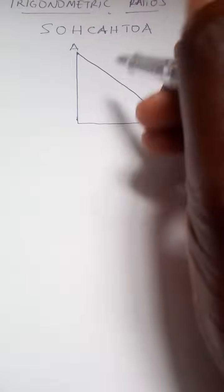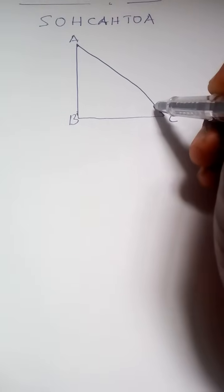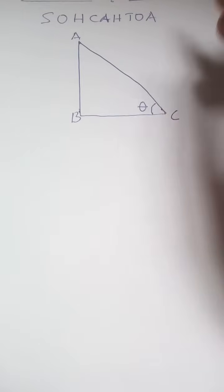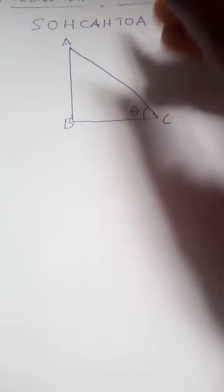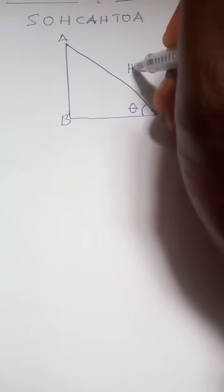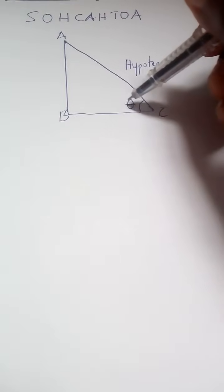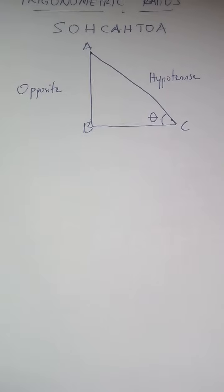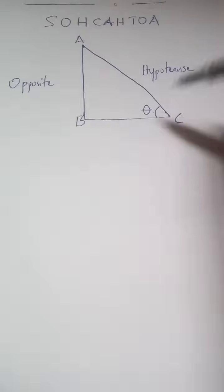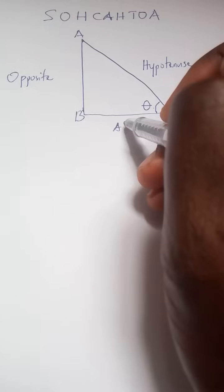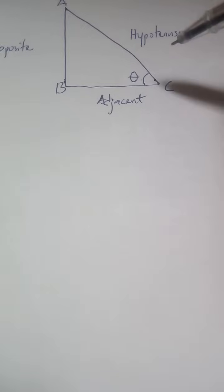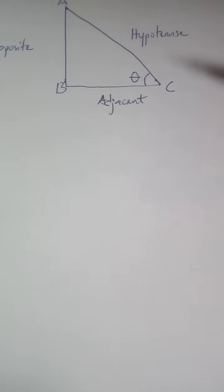Just like we did for Pythagoras' theorem, we have sides A, B, and C. This angle here we can call theta — that's our given angle. As we said in Pythagoras' theorem, this longer side is our hypotenuse. The side facing the given angle is our opposite, and the side at the bottom is our adjacent.